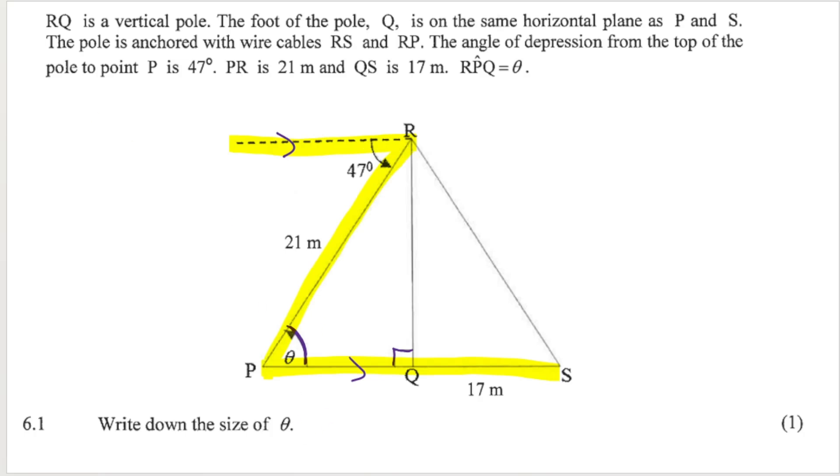So that means that this angle here, theta, would also equal 47 because of alternate angles. They don't ask for a reason, they just want to know the size, but just so you know it would be alternate angles.